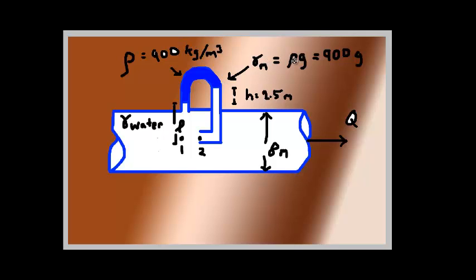We have some kind of liquid here. The density is 900 kilograms per meter cubed, which we can turn into a specific weight with this formula: ρ times g equals 900 times gravity.